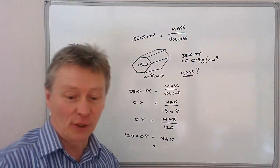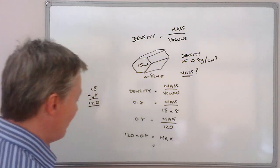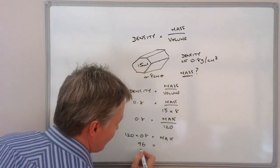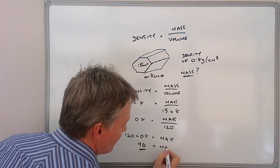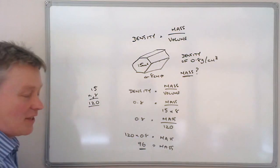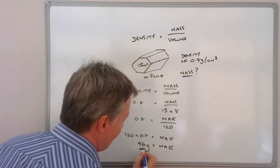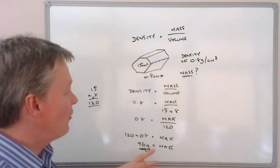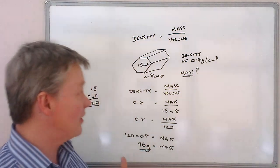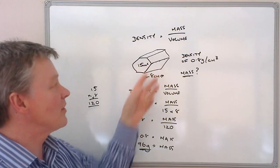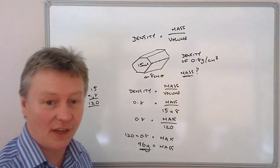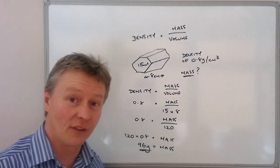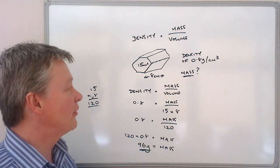Now I'm going to have to have a look at my notes and 120 times 0.8 is 96. So 96 equals mass and mass is measured in grams in this particular case because it was given to us as 0.8. So this particular weight of this prism is 96 grams and that would be sufficient in order for you to answer the question and be awarded the full marks.